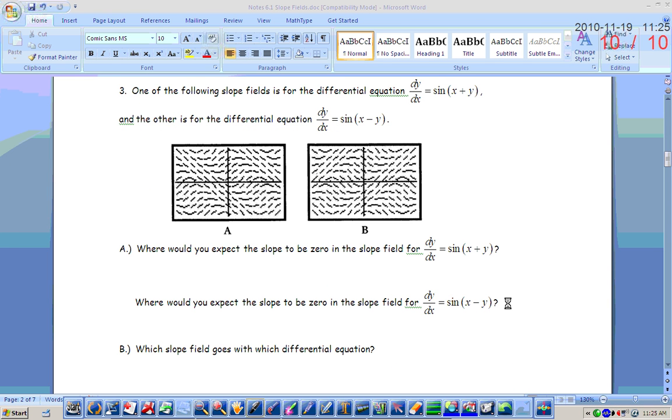one of the following slope fields is for the differential equation dy/dx equals sine x plus y. And the other is for the differential equation dy/dx equals sine x minus y. Our ultimate goal here is to determine which one is which. We're going to match the two. But I've kind of taken some leading questions here to make this a little bit easier. Where would you expect the slope to be zero in the slope field of dy/dx equals sine of x plus y? The sine of what is zero? Zero. So what do we need x plus y to equal? Zero.